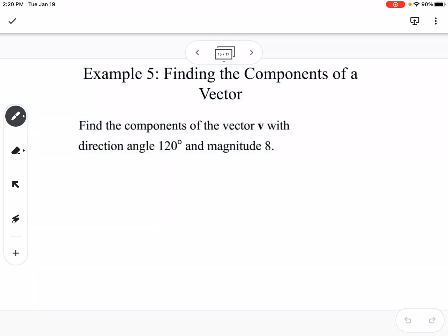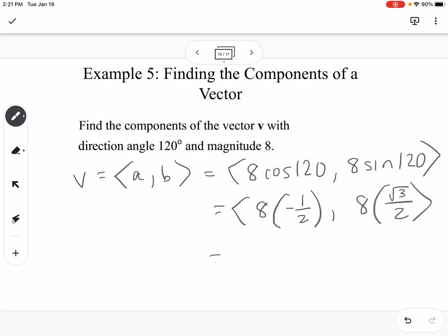For example, find the components of vector v with a direction angle of 120° and magnitude 8. We'll say our components are (a, b). This would be (8 cos 120°, 8 sin 120°). Think back to that unit circle. So this would be 8 times (-1/2) and 8 times (√3/2). If we simplify that, that would be -4 and 4√3. So a would be -4 and b would be 4√3.